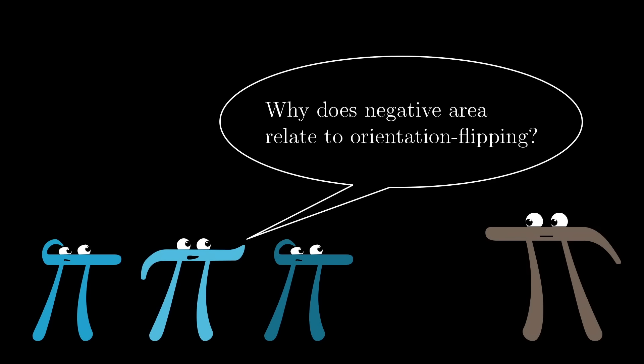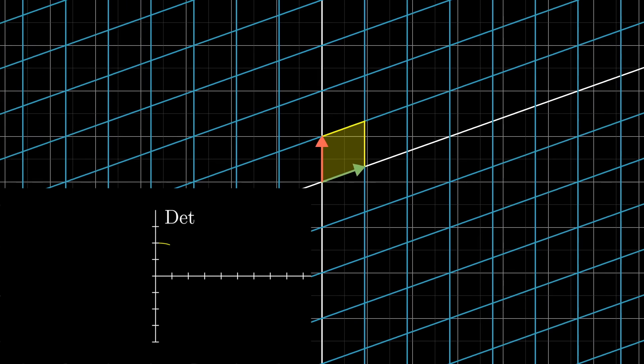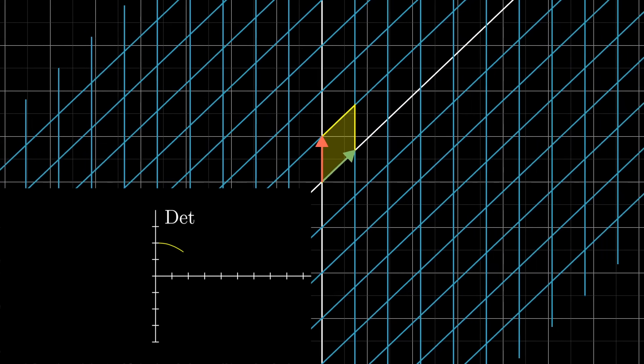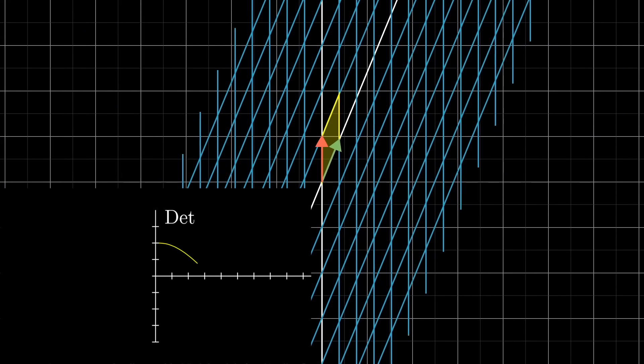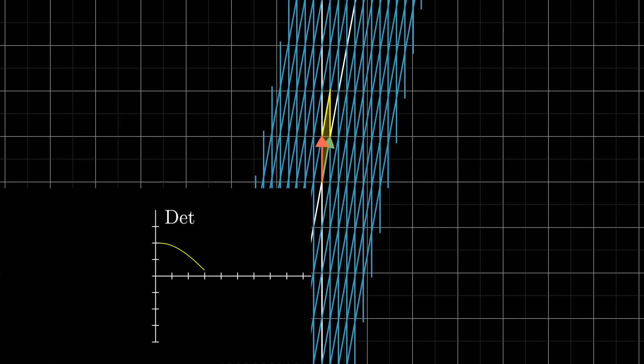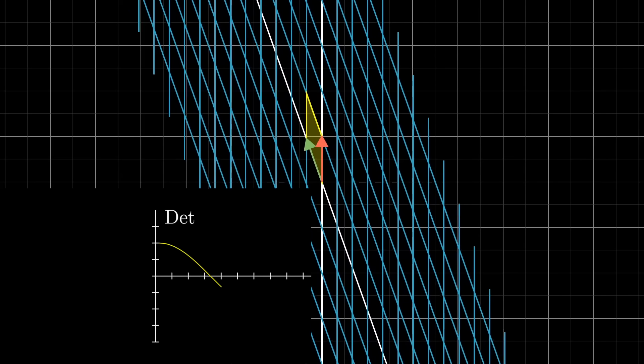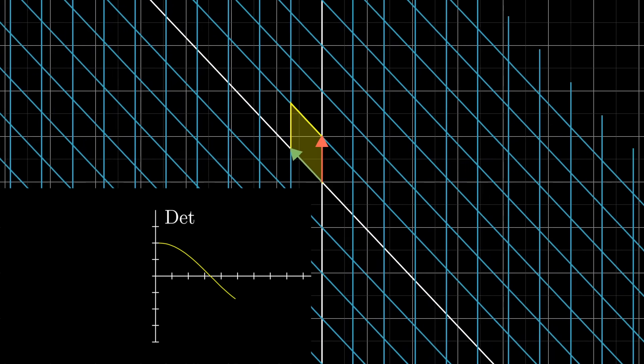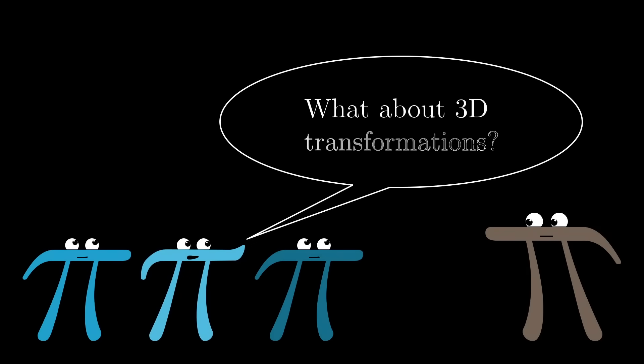So why would this idea of a negative area scaling factor be a natural way to describe orientation flipping? Think about the series of transformations you get by slowly letting i-hat get closer and closer to j-hat. As i-hat gets closer, all of the areas in space are getting squished more and more, meaning the determinant approaches zero. Once i-hat lines up perfectly with j-hat, the determinant is zero. Then, if i-hat continues the way that it was going, doesn't it kind of feel natural for the determinant to keep decreasing into the negative numbers?